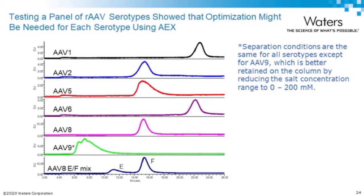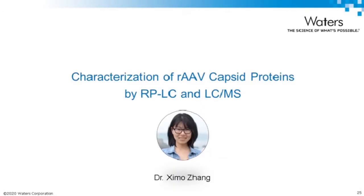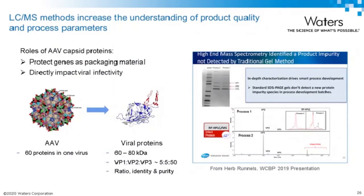That concludes my portion. I now hand over to Dr. Ximo Zhang, who will discuss intact and peptide analysis of AAV capsids by reverse-phase LC and LC-MS. The AAV capsid shell is comprised of viral proteins VP1, VP2, and VP3. In addition to protecting the packaged genes, these proteins directly impact viral infectivity and are therefore a critical part of AAV analytics. One capsid contains roughly 60 copies of these proteins, with masses around 60–80 kiloDaltons, in an approximate ratio of 1:1:10 for VP1:VP2:VP3.